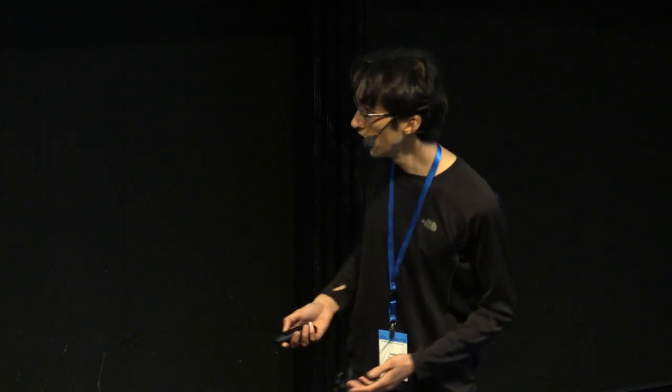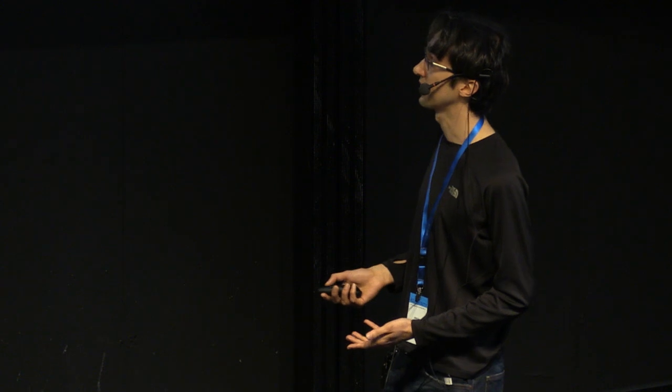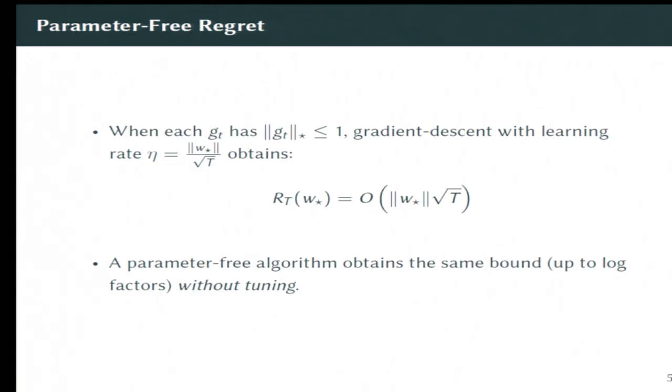That's why you're doing the optimization in the first place. So what people do in practice is they just sort of randomly guess. This is what hyperparameter tuning is. What we're going to try to do is come up with an algorithm that can get the same optimal regret guarantee, but without any need for tuning.